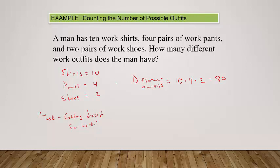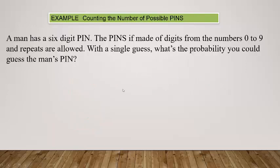Let me follow it up with one that might not seem as obvious. Suppose a man has a six digit PIN for a personal identification number on his debit card. The PINs are made of digits from the numbers zero to nine and repeats are allowed. So the digits could be one, one, two, three, eight, seven or seven, five, five, four, one, two.